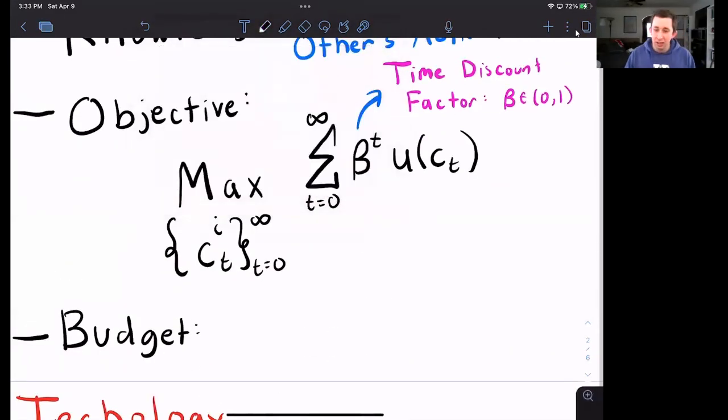So the budget, what do we have to spend? We have the total present value of our lifetime endowment because we are trading before time starts. So I have the entire value of my lifetime endowment available to me to spend and trade. What is the value of my endowment? Generally, when we do budgets, it's price times quantity or price times endowment.